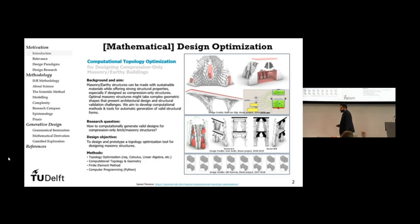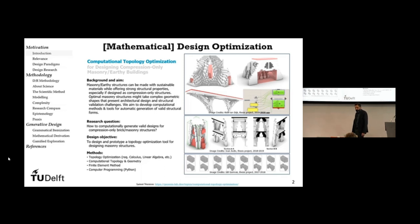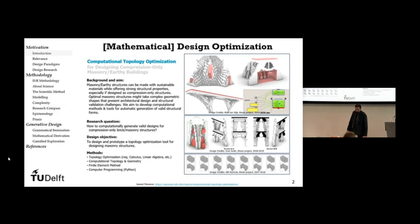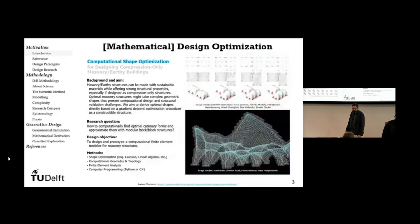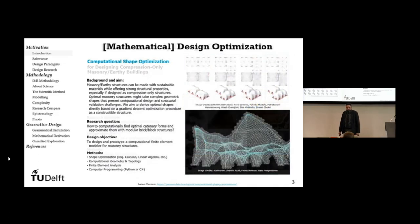I decided to first give you a picture of the end goals. These are the potential graduation topics, the avenues for future research that we are working on right now. Don't worry — you don't need to read the slides. You have all of them on our website, genesislab.dev. These are categorized into three main major topics.